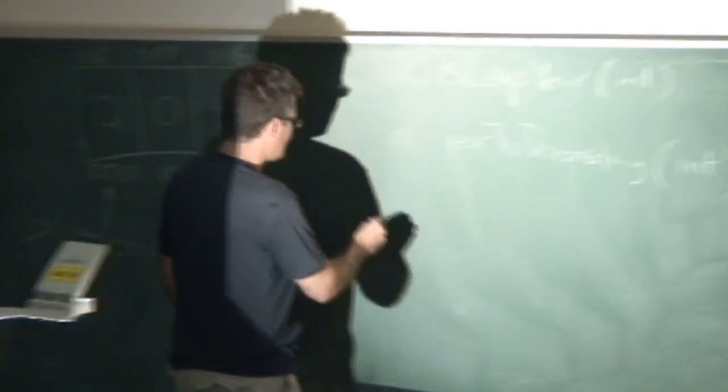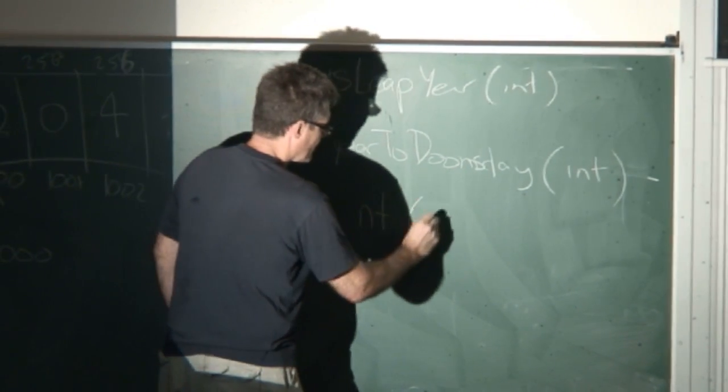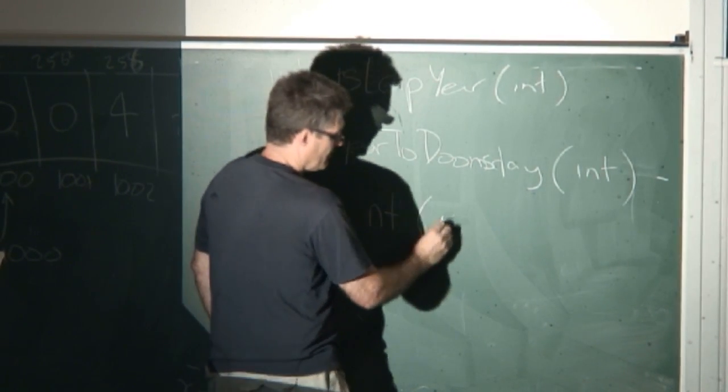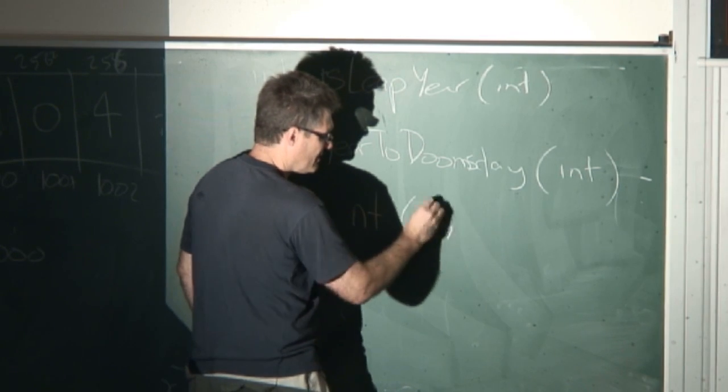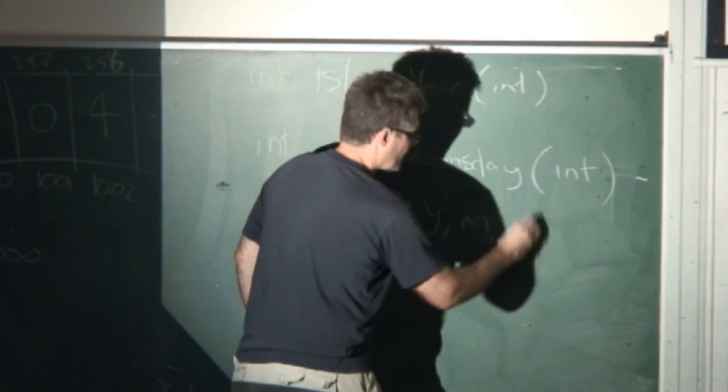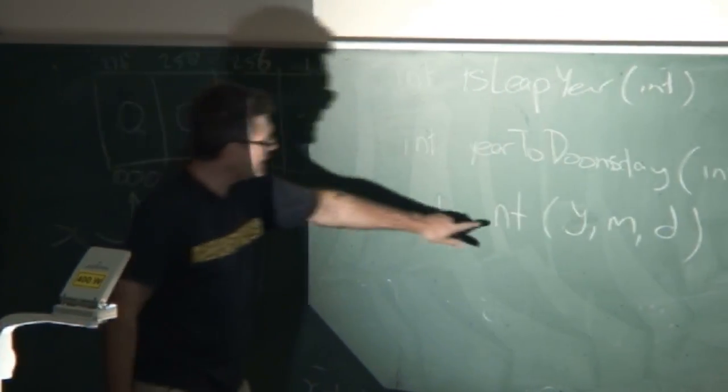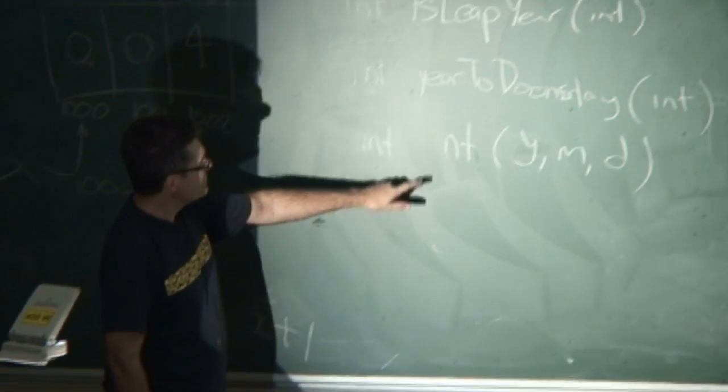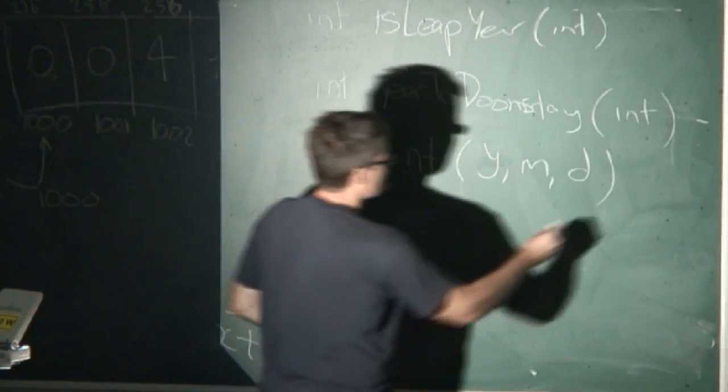So, what does next Thursday take in? Takes in a month, what? Month, day, and year? That can't be the right order. Is it year, month, day? Takes in three integers: year, month, and day. And I'm just calling it nt rather than next Thursday, so I can be lazy with my typing.